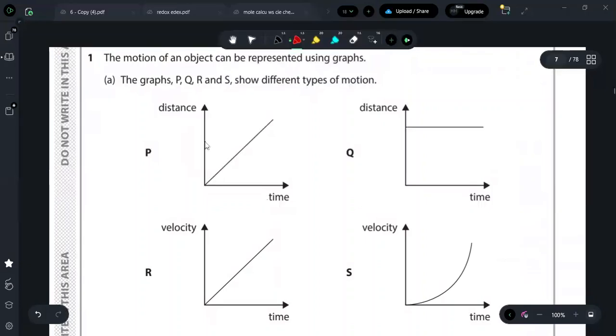First, P and Q are distance-time graphs. First I will see what the graph means. A graph has two features: the gradient and the area. If I have to analyze this graph, first I will see how it behaves. With time, with increasing time, distance is increasing linearly.